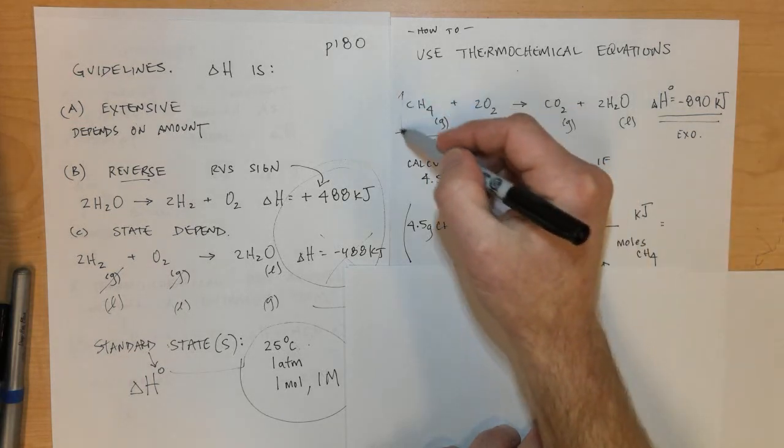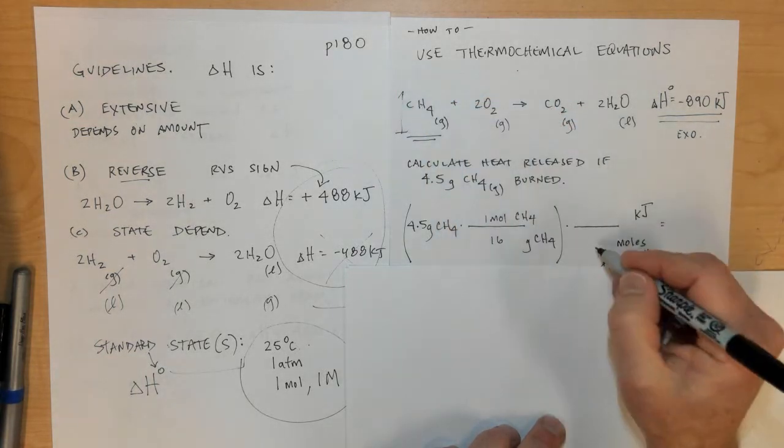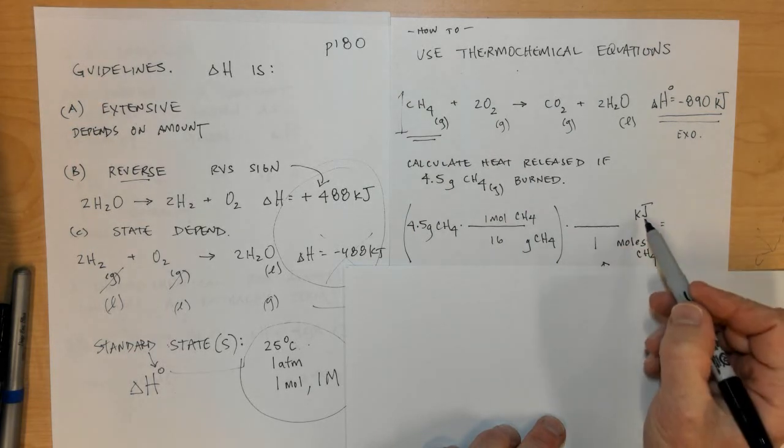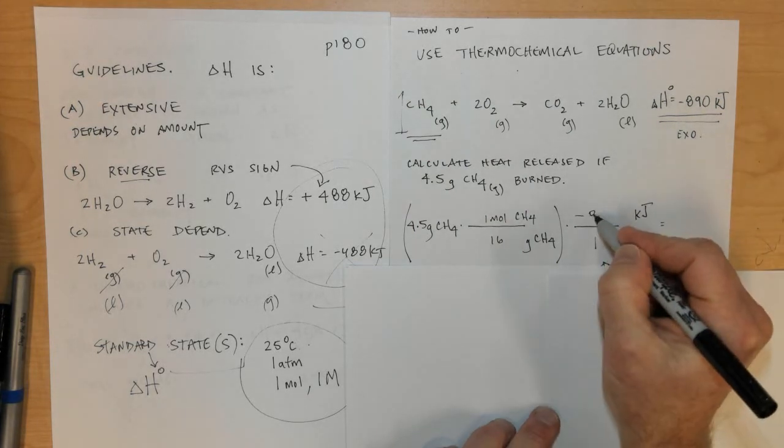A one is in front of CH4 and in front of kilojoules is negative 890.